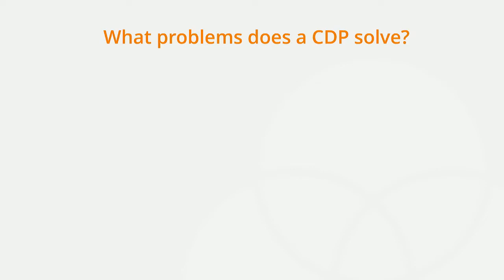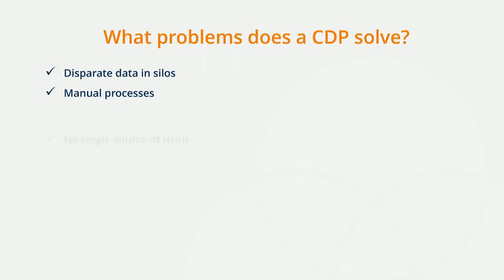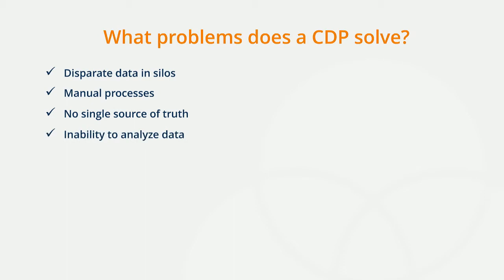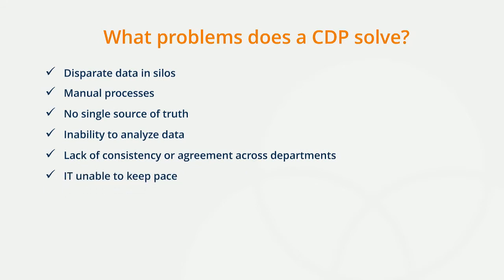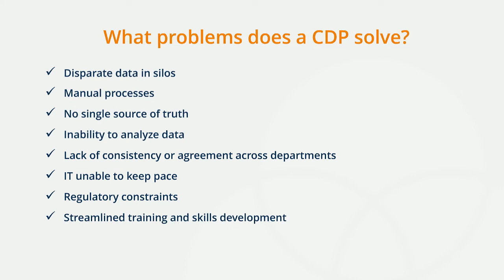Even once we've captured this data, we still face a number of challenges — things like data living in disparate silos throughout the organization. This requires manual processes and cross-team collaboration to access the data, and for many organizations it makes it nearly impossible to have a single source of truth. These challenges lead to an inability to analyze or access data without IT resources or advanced query writing skill sets. You have inconsistencies across departments and bottlenecks when marketers flood IT with requests. Add on regulatory and documentation constraints and you have a lot to consider. All these problems present roadblocks as we think about creating that seamless cross-channel experience. Ultimately, more and more marketers are turning to a customer data platform.